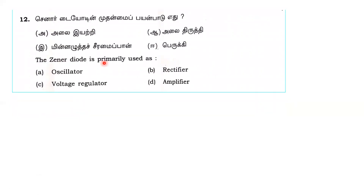Next question: the Zener diode is primarily used as a voltage regulator. It operates at breakdown potential and maintains a constant potential, making it suitable as a voltage regulator rather than a rectifier.